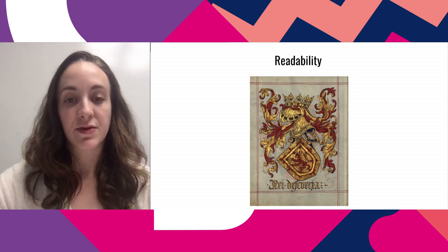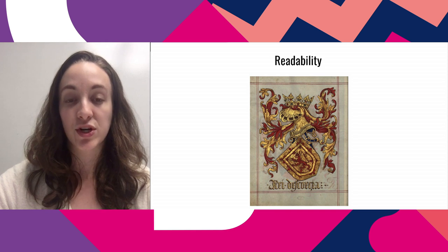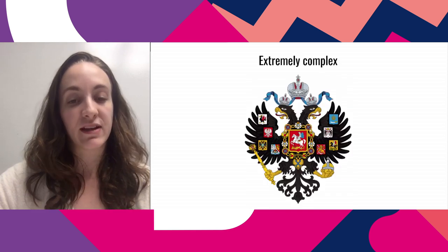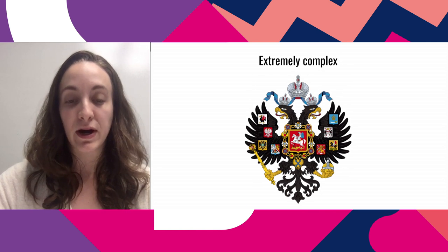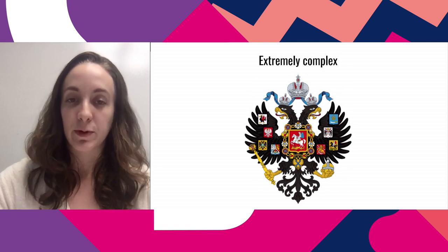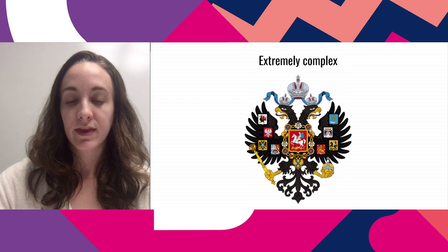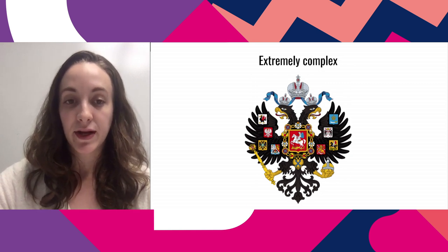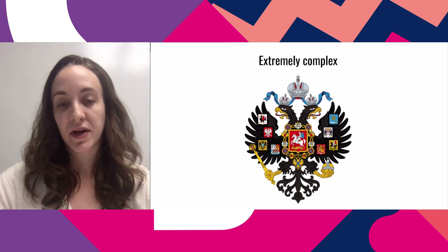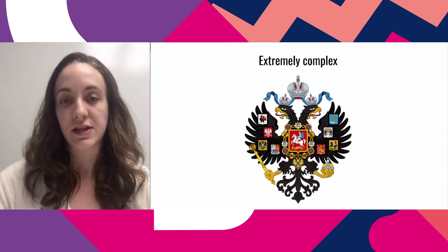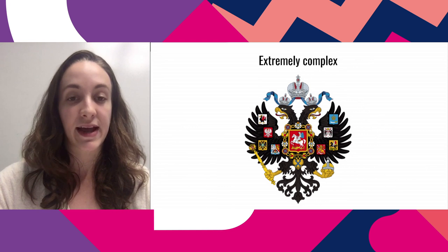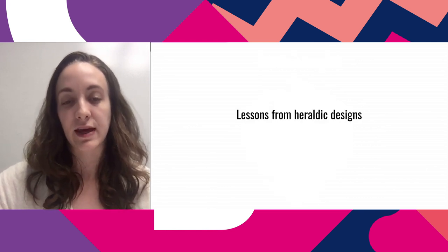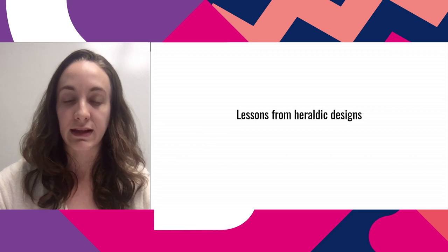Readability is not always great. This coat of arms from Portugal printed onto fabric is beautiful, but it's really hard to make out the letters along the bottom — not super readable. Some are very complex, like the one from Imperial Russia. If you could look at all the details with a magnifying glass, that could be interesting, but if you put it onto a coat, a lot of that detail would probably get lost.